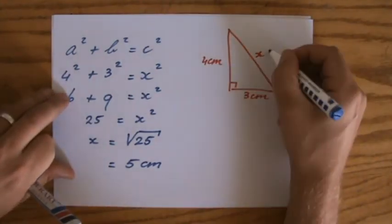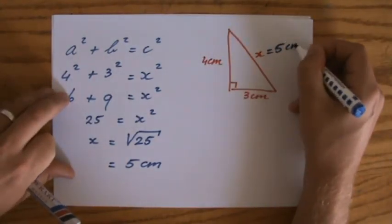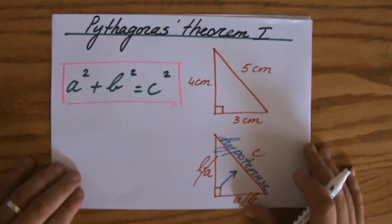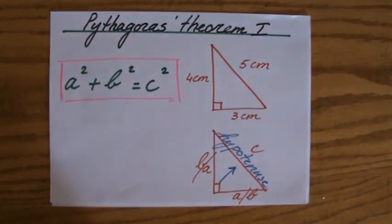So, the answer is 5 centimeters. And that's what I said before already. A squared plus B squared equals C squared. Pythagoras theorem.